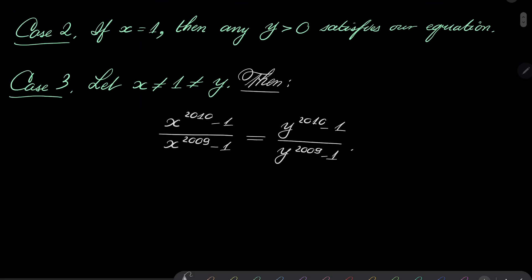These two expressions are very similar, so it may be a good idea to consider a function. Let f go from 0 to 1 union 1 to infinity, taking number t and mapping it to t^2010 - 1 over t^2009 - 1.